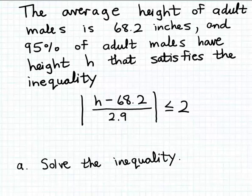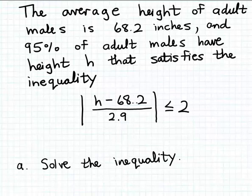In this example, we're going to consider an application of an absolute value inequality. We're told that the average height of adult males is 68.2 inches, and that 95% of adult males have height h that satisfies the following absolute value inequality: the absolute value of h minus 68.2 divided by 2.9 has to be less than or equal to 2. We want to solve this inequality and then interpret the results.